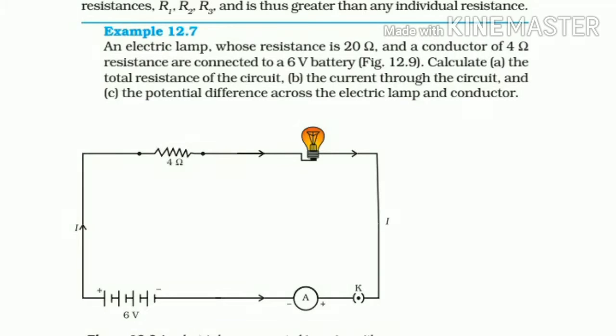It is based on the resistance in series combination. An electric lamp whose resistance is 20 ohm, and a conductor of 4 ohm resistance are connected to a 6 volt battery.